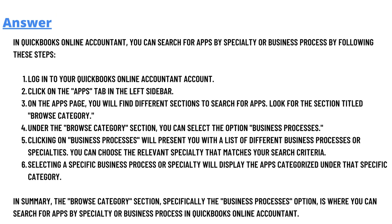The answer is: in QuickBooks Online Accountant you can search for apps by speciality or business process by following these steps. Log in to your QuickBooks Online Accountant. Click on the app tab in the left sidebar.